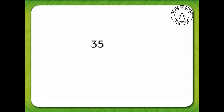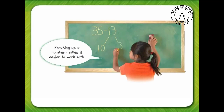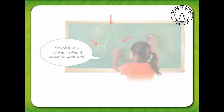Another way to subtract: we are going to find 35 minus 13. Breaking up a number makes it easier to work with. Break apart the number 13 to subtract. 13 can be broken apart into 10 and 3. Subtract 10 from 35 first.